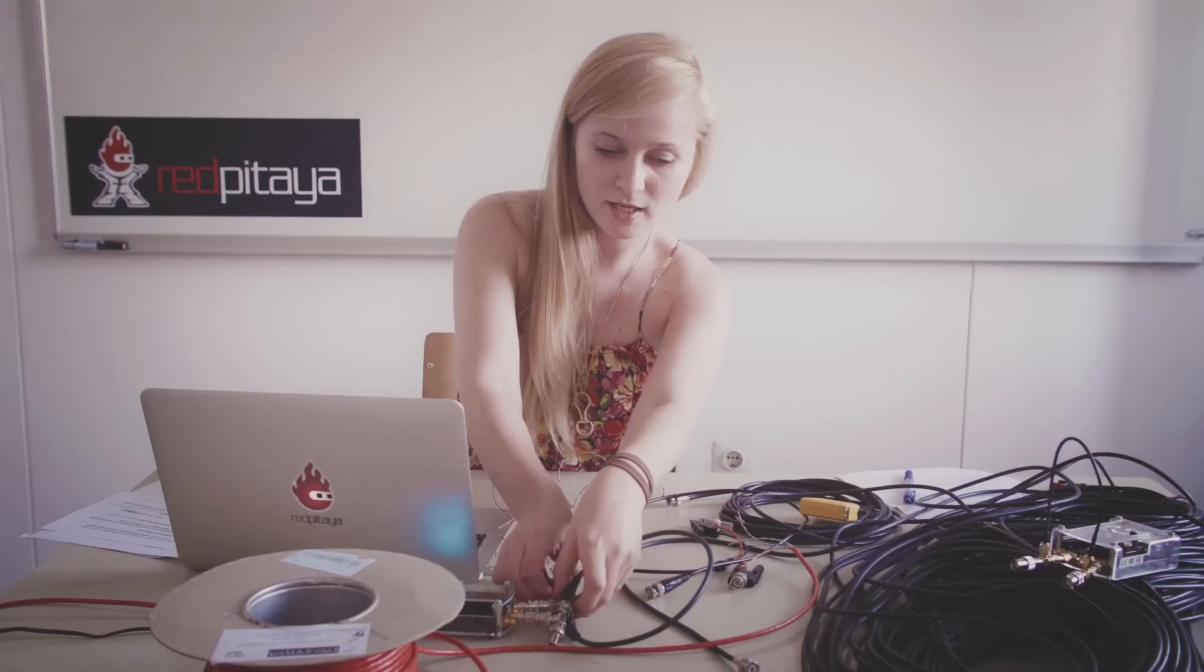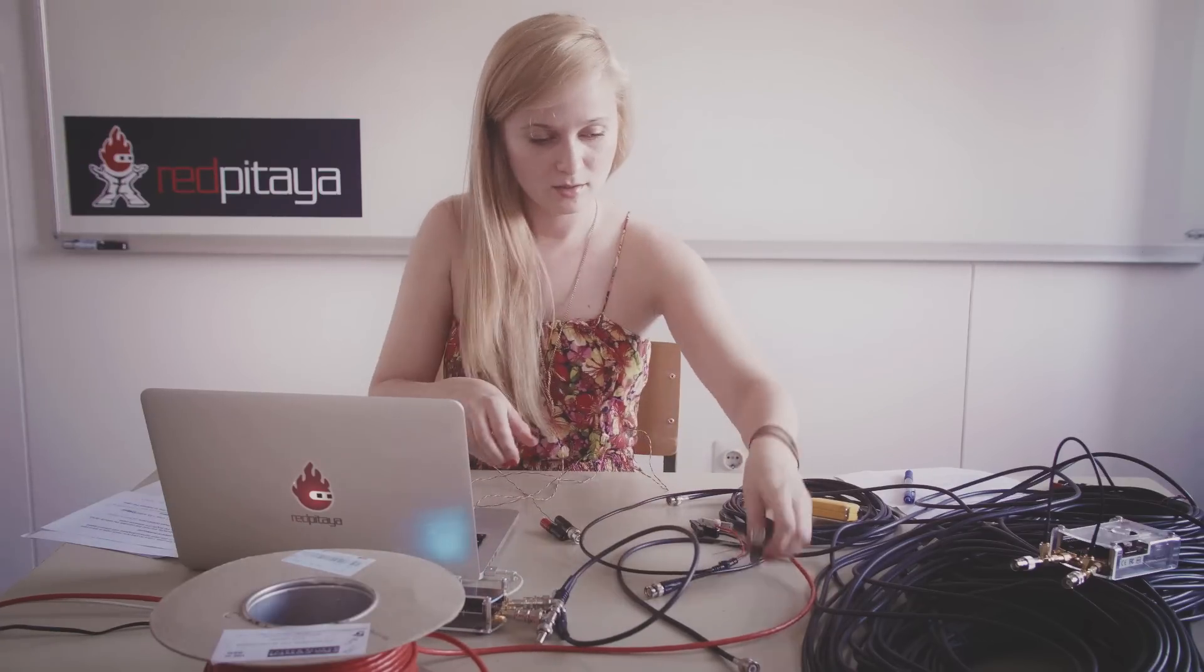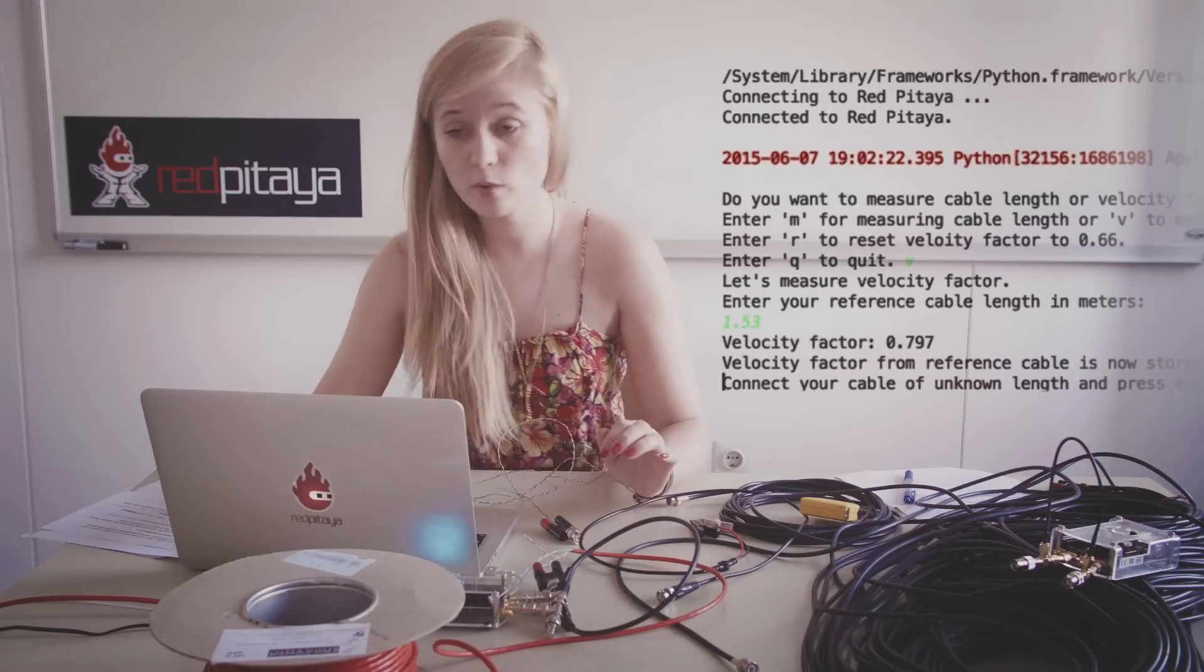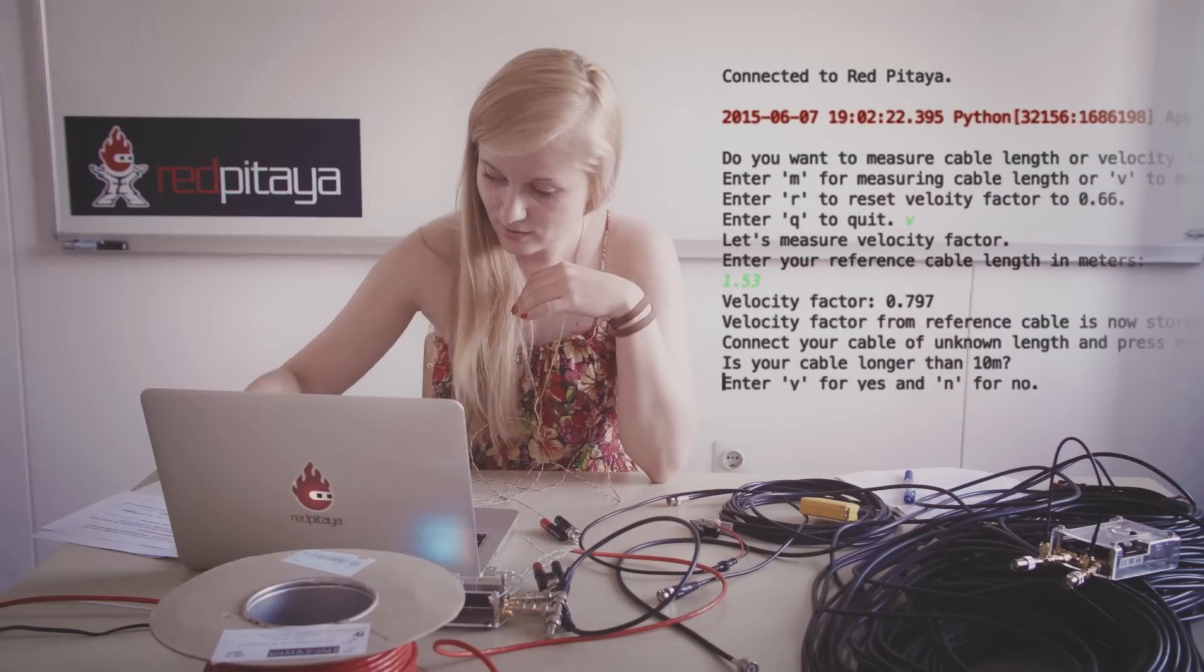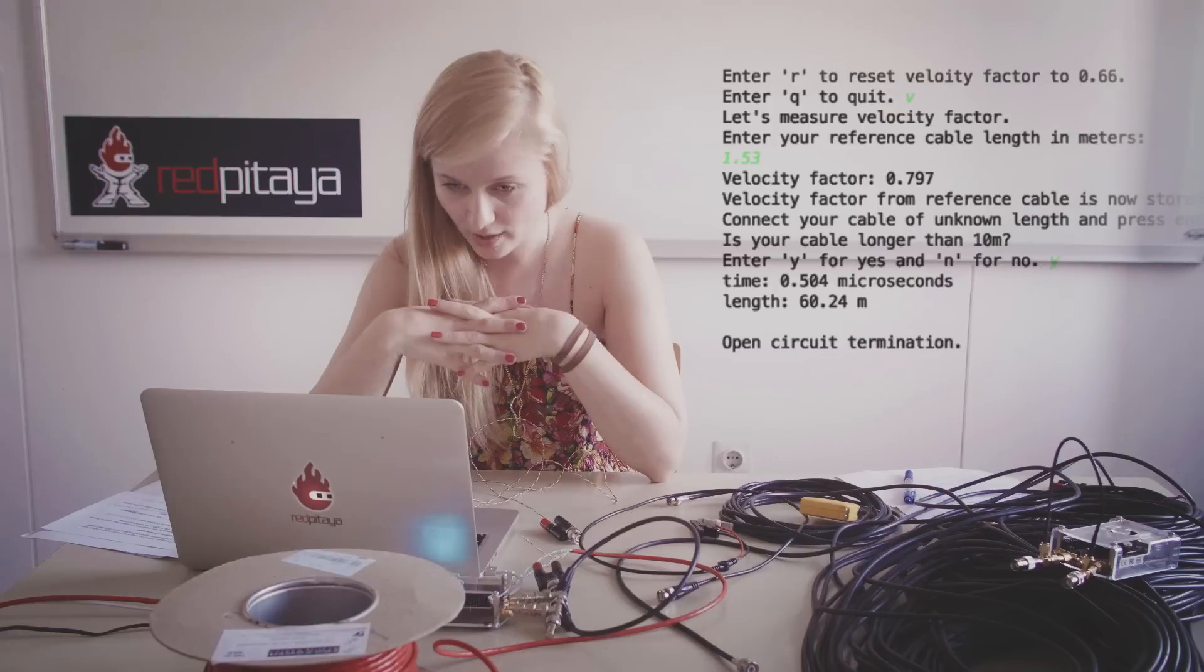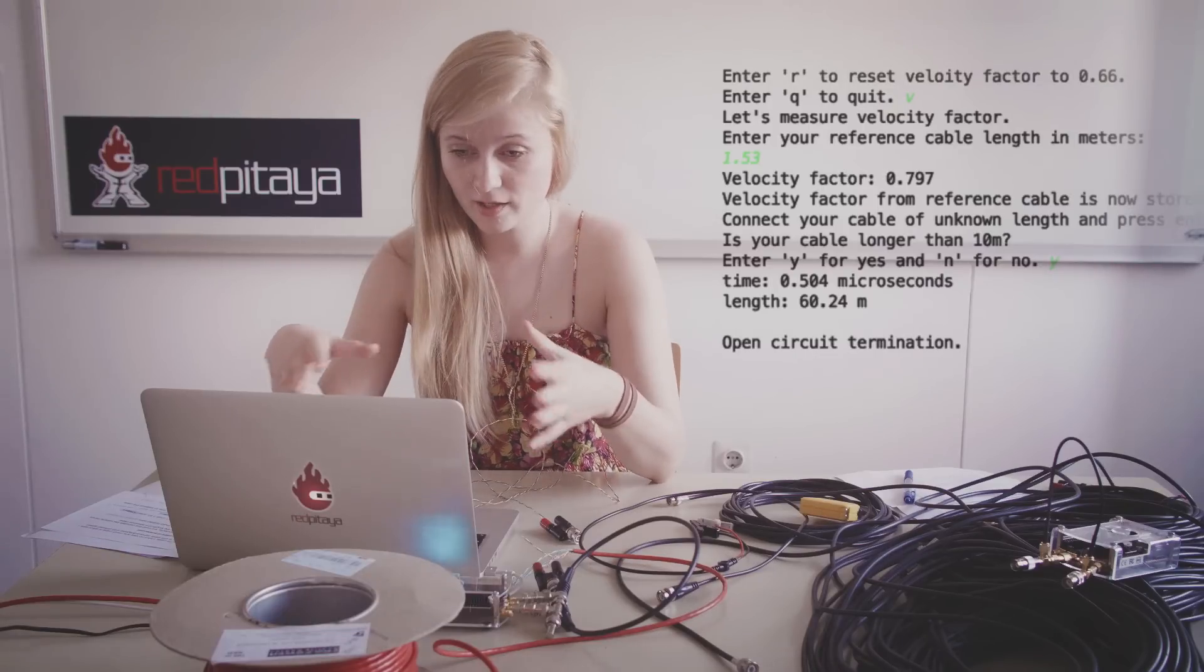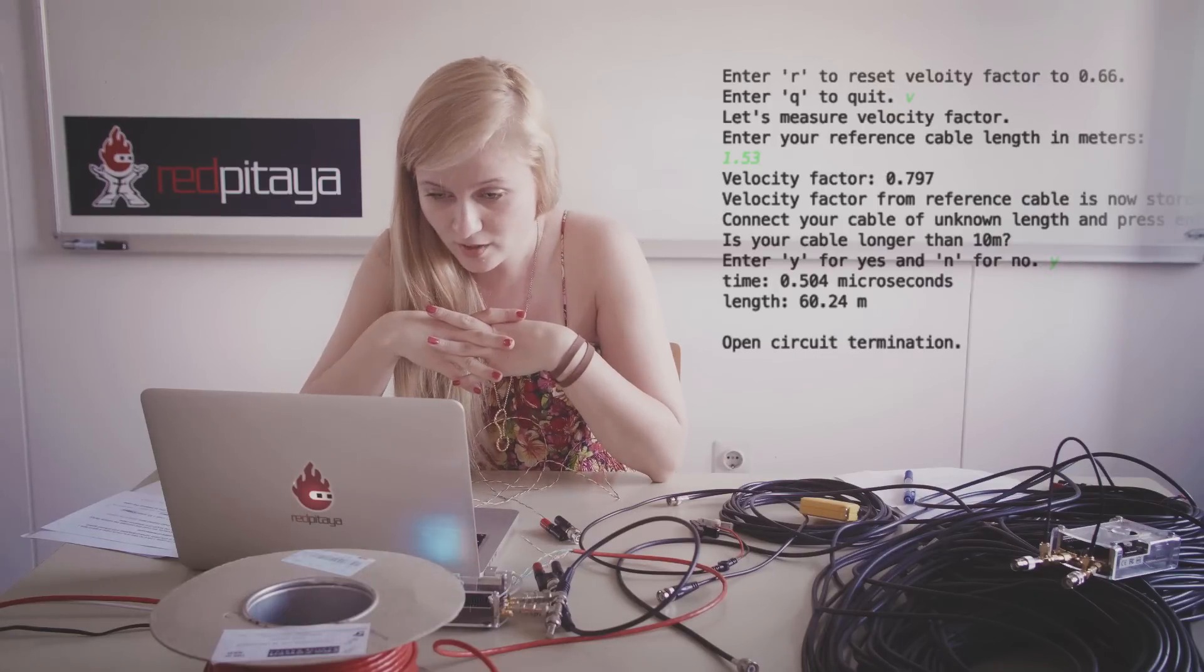Now it's time to measure the length of a UTP cable. Let's disconnect this. And we press enter. Yes. So the length of the cable is 60.24 meters.